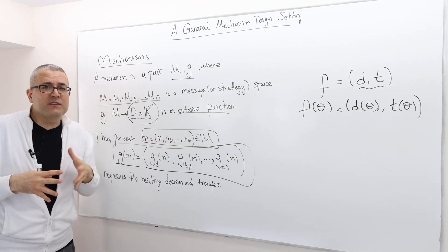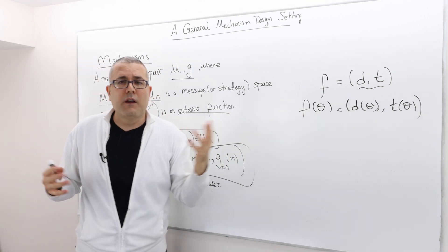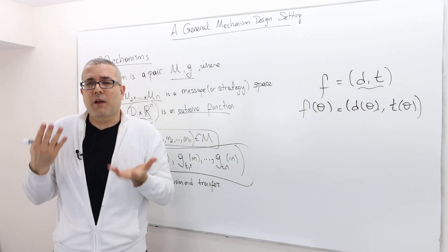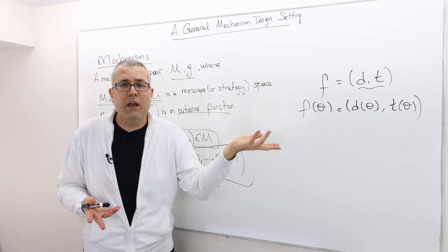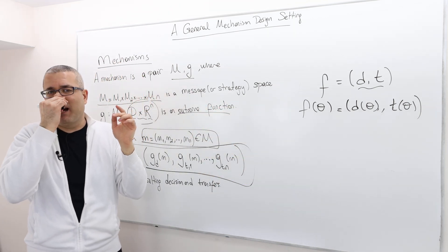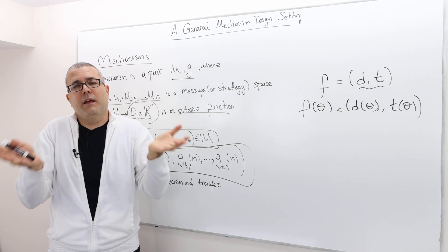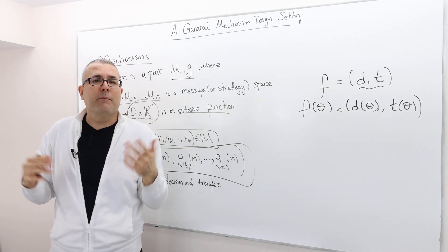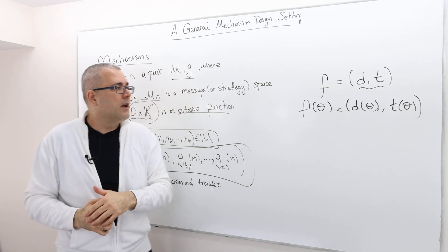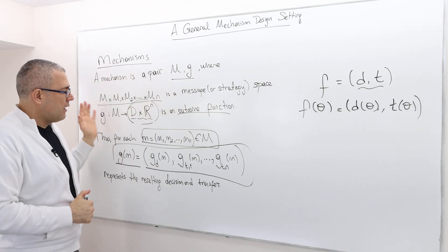I mean, you may have two types, but you may ask guys - I mean, you can give them a game, a mechanism, which has infinitely many messages. It's possible. It's allowed at least. All right.